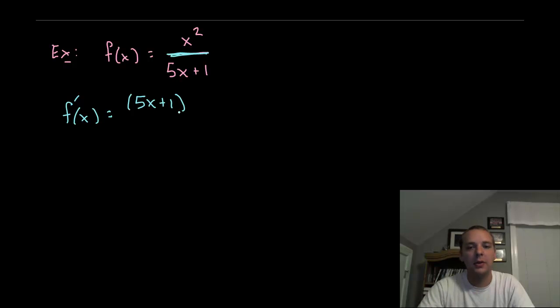Low, so just copy the denominator, d high would be 2X, less high, that's X squared, and then d low would be 5, O low squared. So we'll take the whole denominator squared.